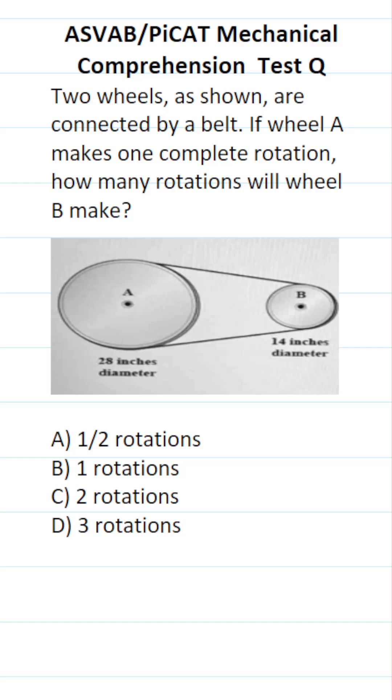This ASVAB PyCat Mechanical Comprehension Practice Test question says, Two wheels, as shown, are connected by a belt. If wheel A makes one complete rotation, how many rotations will wheel B make?